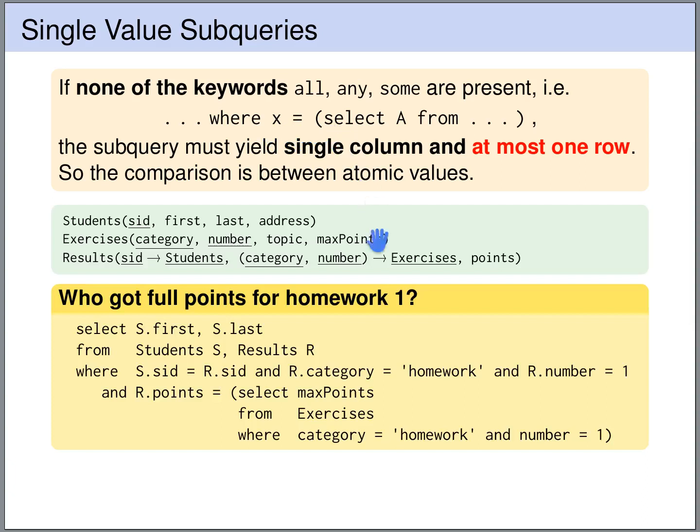Let's have a look at an example. Here we want to have the students that got full points for homework 1. So in the outer query we query the students table and the results, we select only the results that belong to the student, and we look only at homework 1 results.